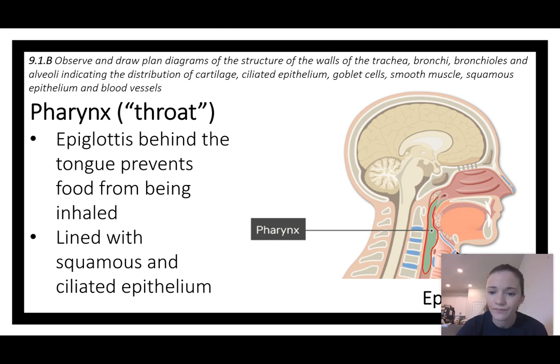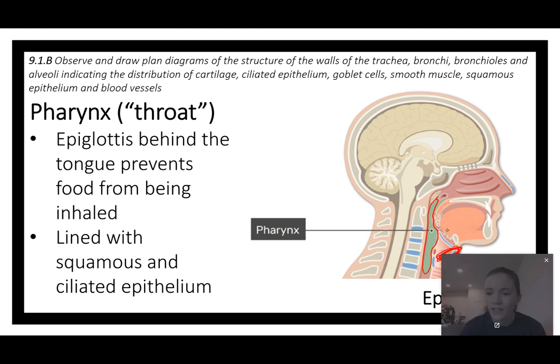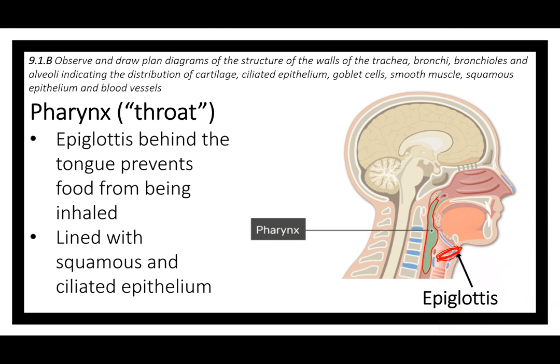Moving on — your pharynx is the back of your throat, highlighted here. We've got the epiglottis, which is that switching mechanism — food or air — right there in the diagram.